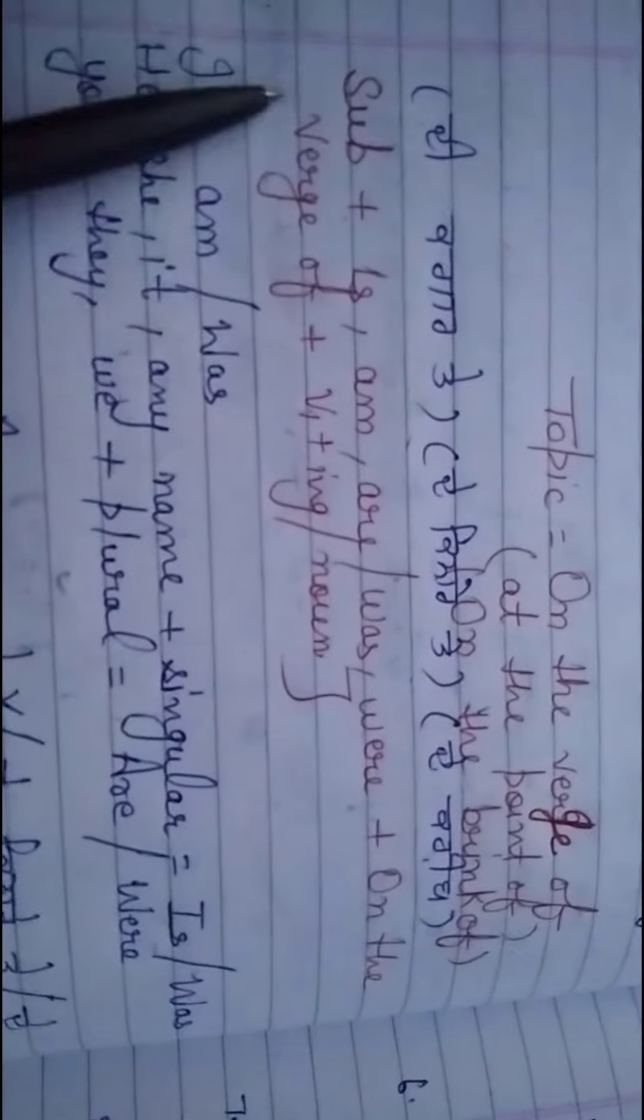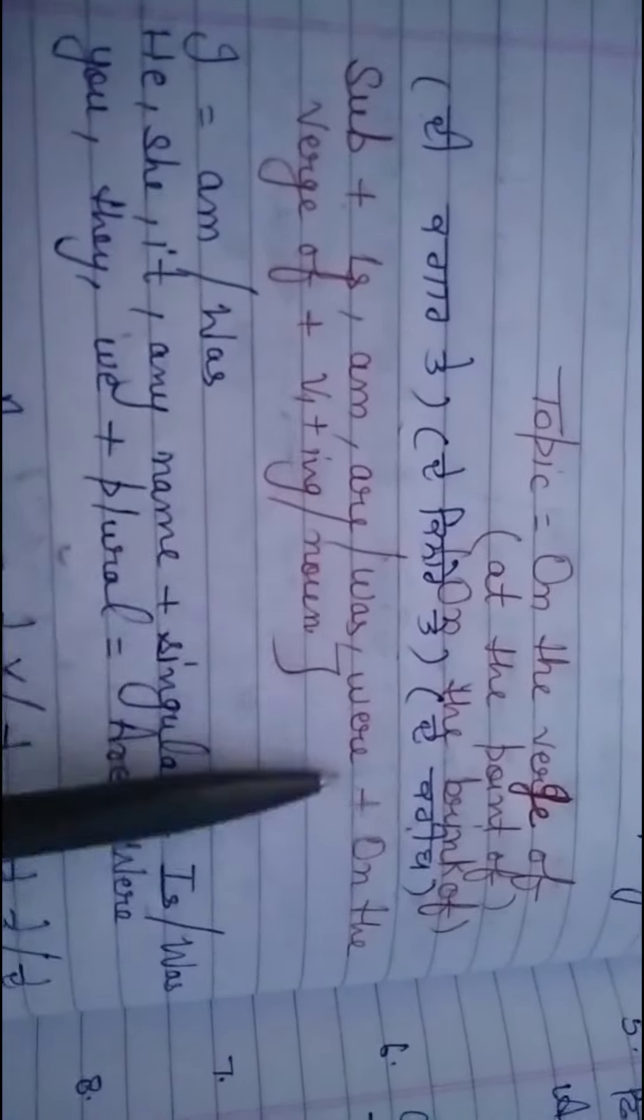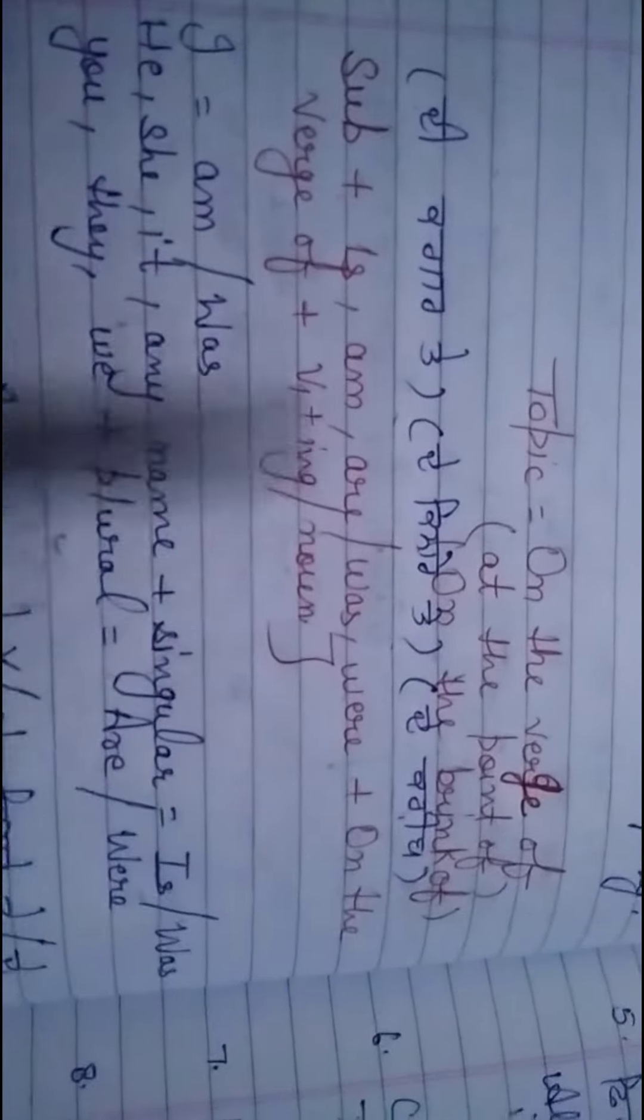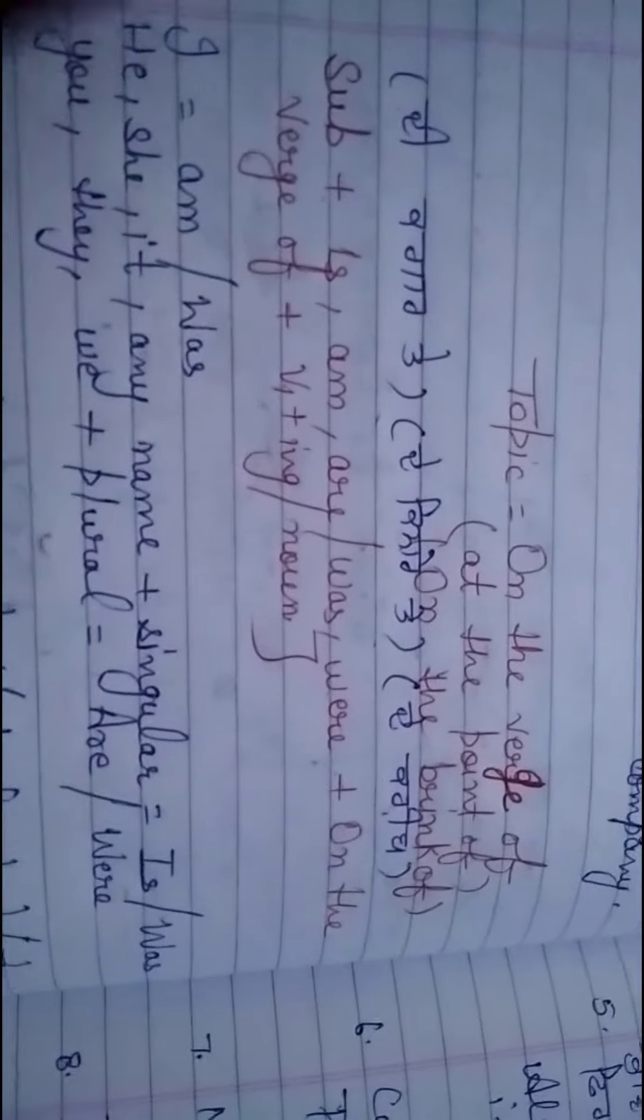If you want to structure the subject, use is/are or was/were on the verge of. Presently, use is/are as helping verb according to subject. In the past, use was/were on the verge of. You can use these structures with V1 plus ing form.